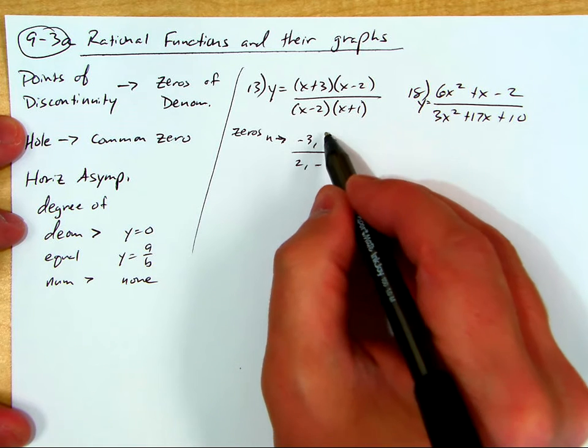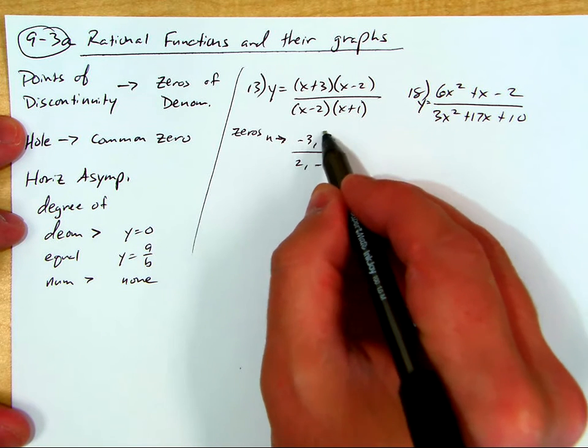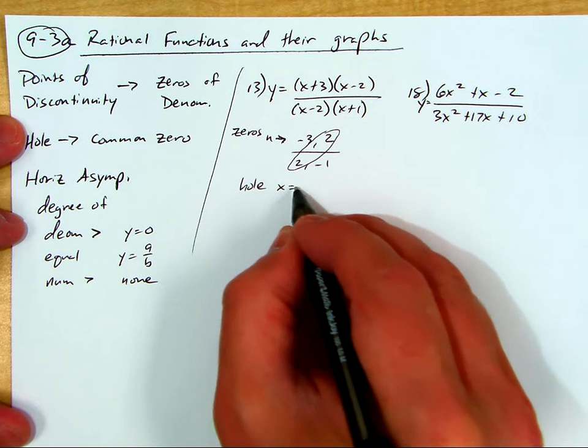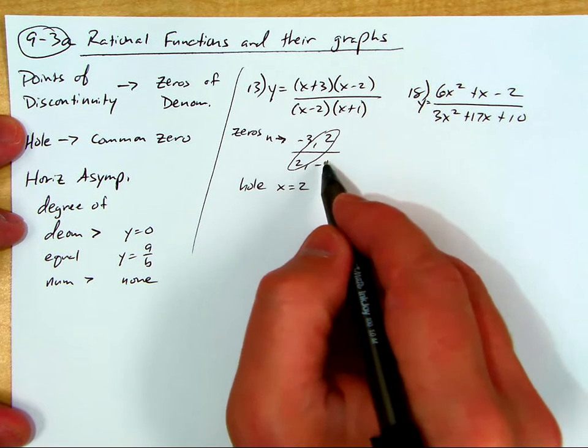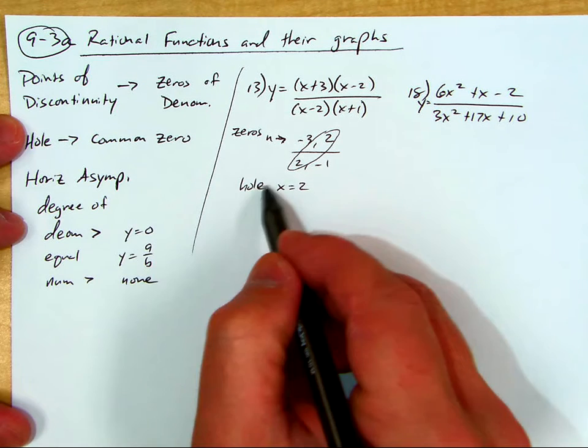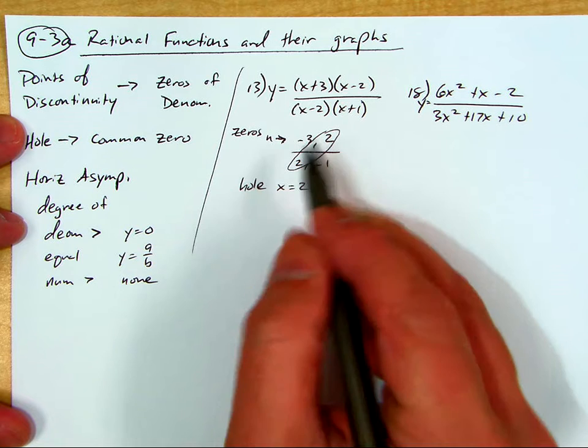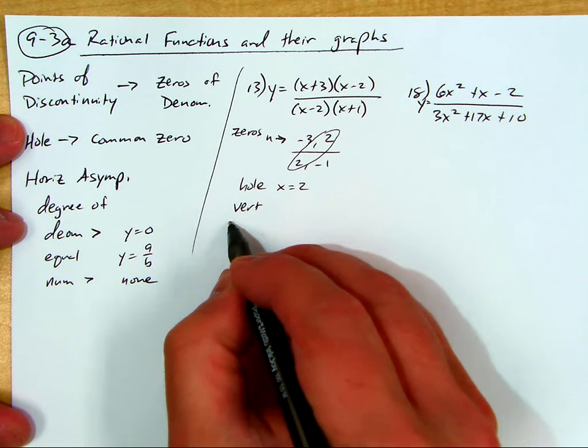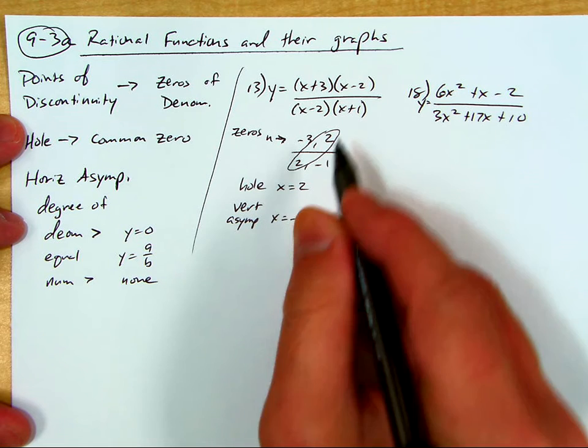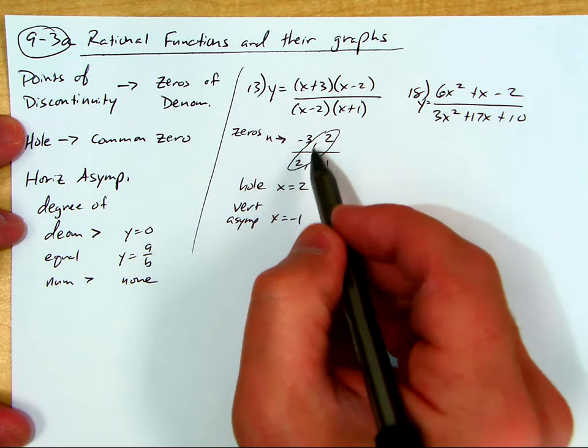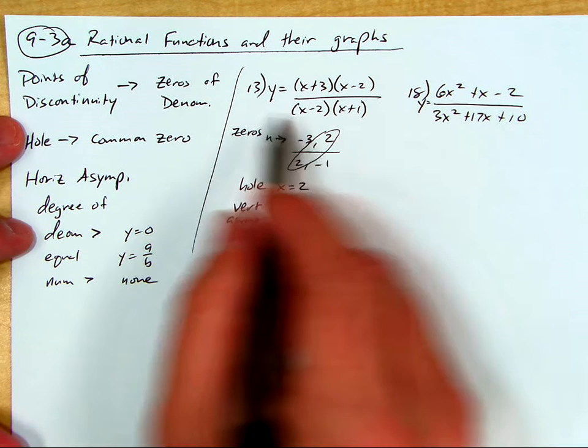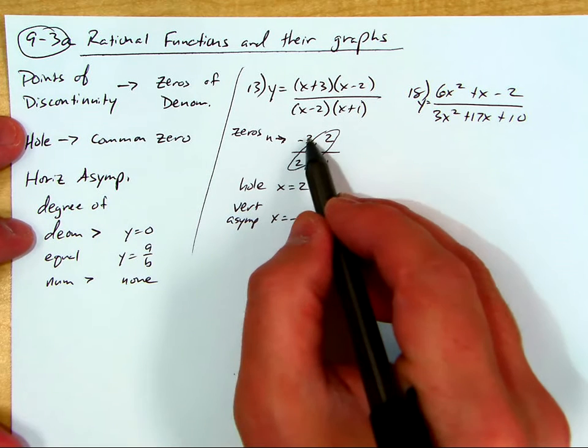And this is what I said a second ago. You see how both the zeros on the top and the bottom happen at 2? So that means there is a hole in the graph at x equals 2. And then whatever is left on the bottom is the point of discontinuity. Since it's not a hole, we know this has to be a vertical asymptote at x equals negative 1. A lot of students say, well, what do you do with the negative 3? Well, nothing in this case. It just makes the function zero, but it does not become a point of discontinuity. It actually is an x-intercept.